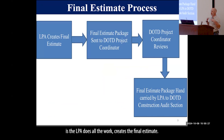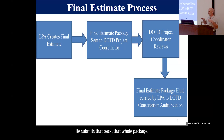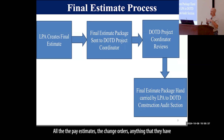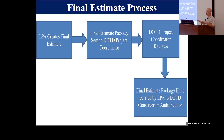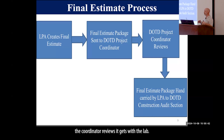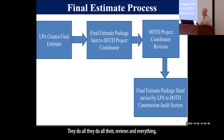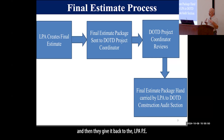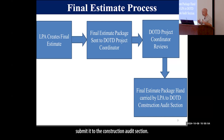How it works is the LPA does all the work, creates the final estimate, and submits that whole package — the 2059, all the pay estimates, the change orders, anything that they have collected — to the project coordinator. The coordinator reviews it, gets with the lab, they do all their reviews, and then give it back to the LPA PE. Then they submit it, or the CEI submits it, to the construction and audit section.